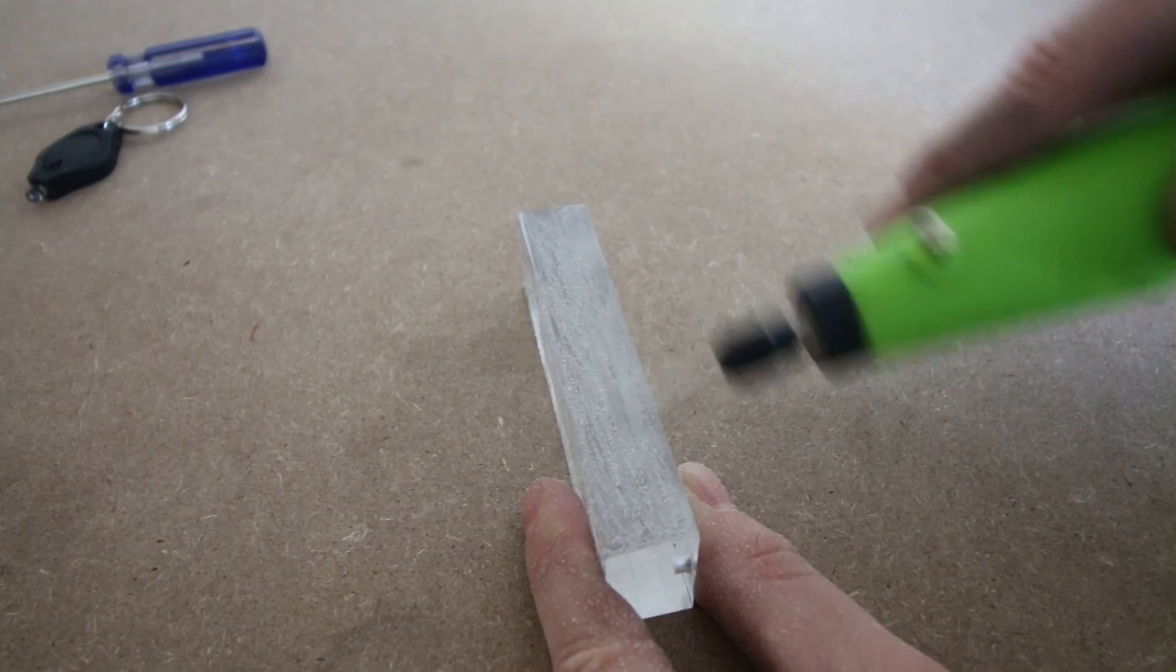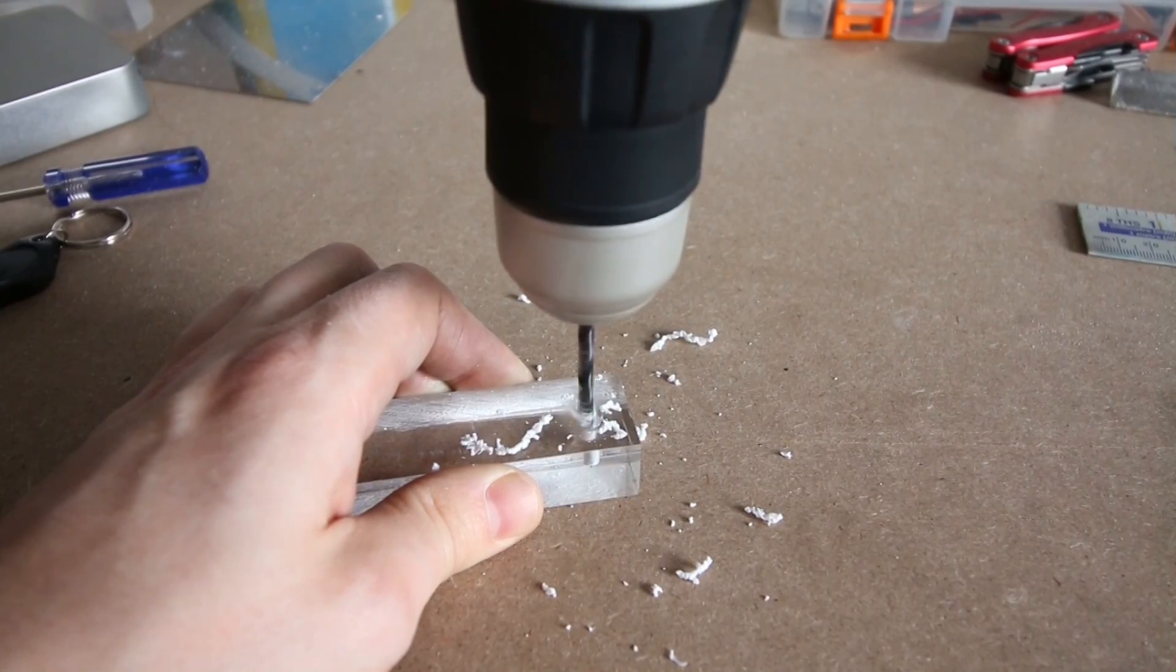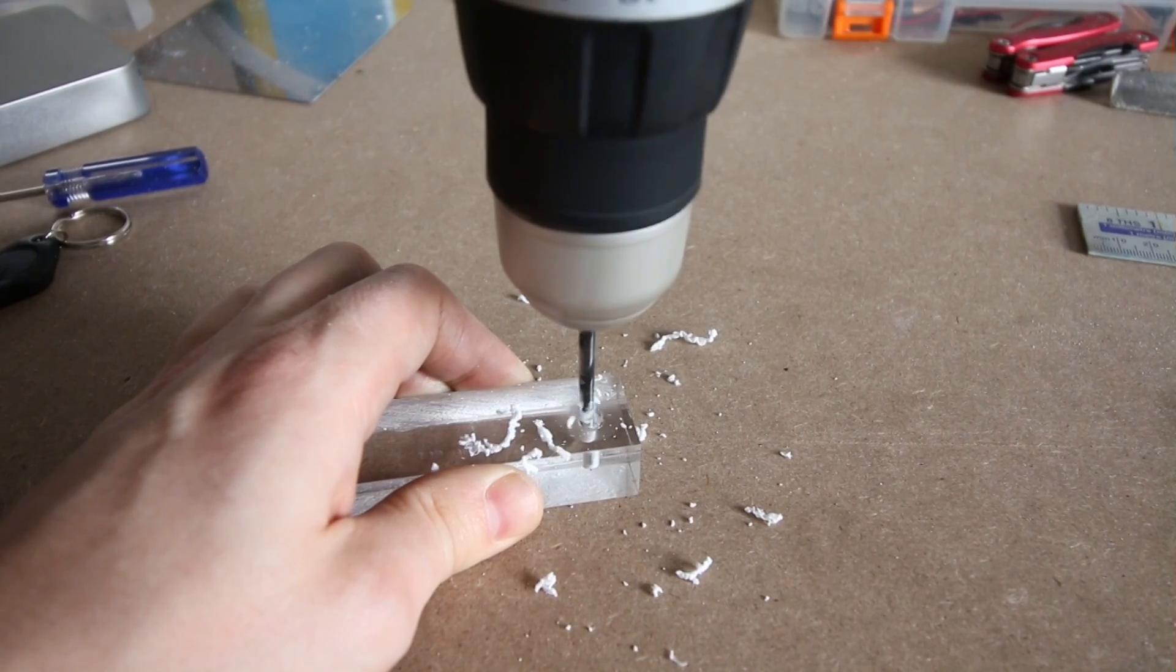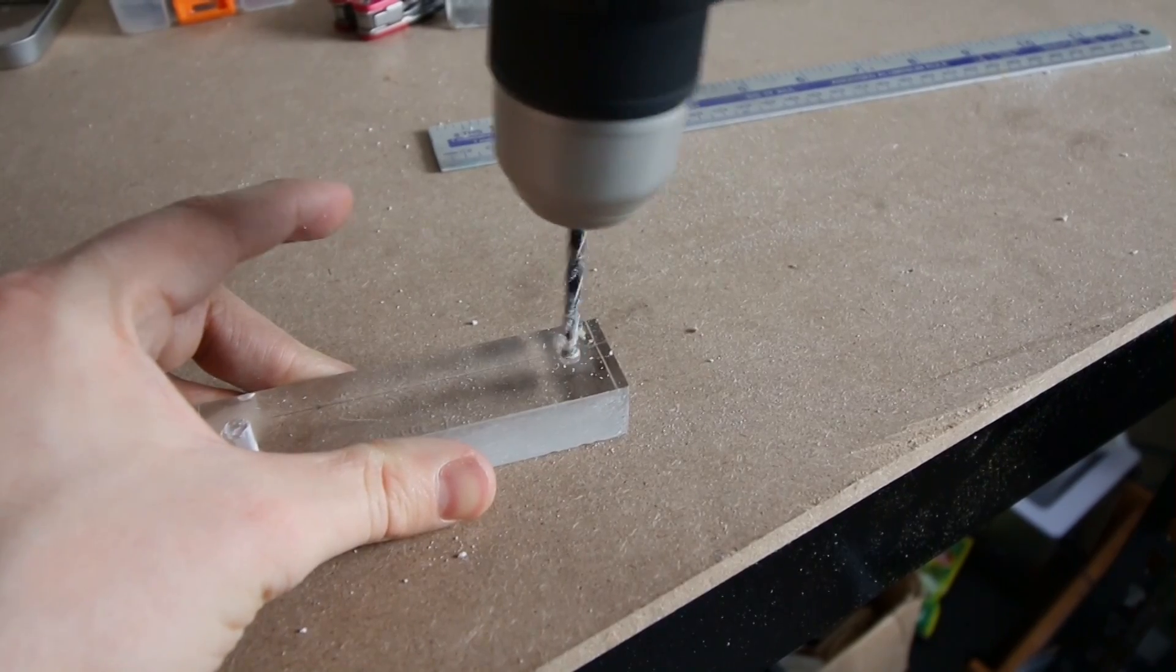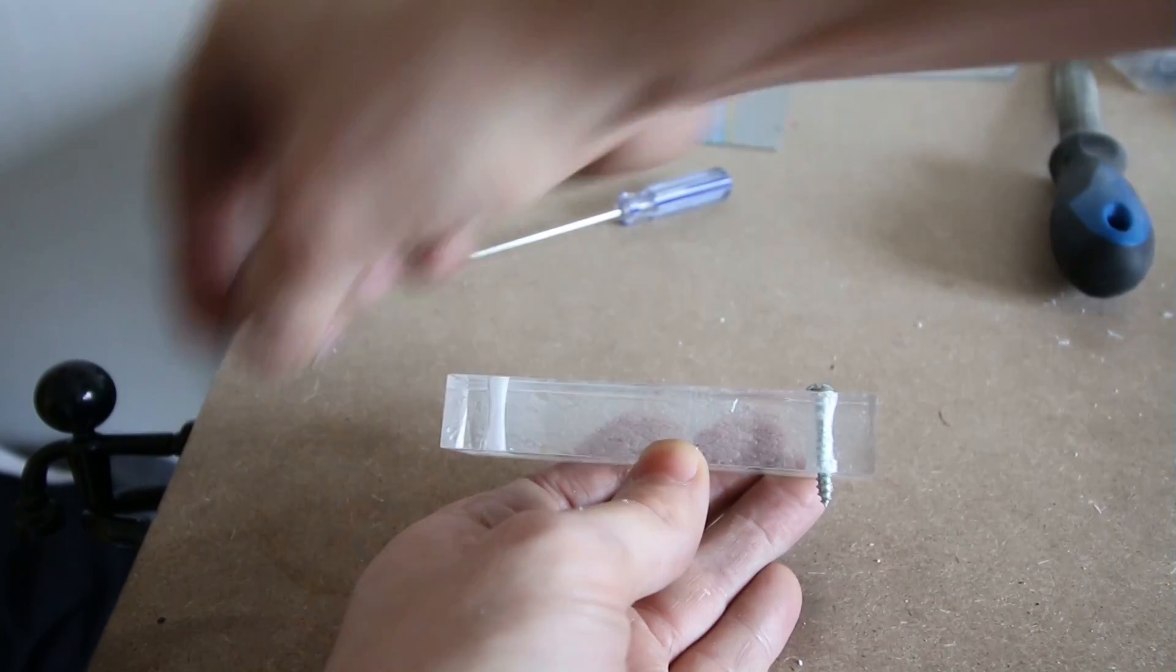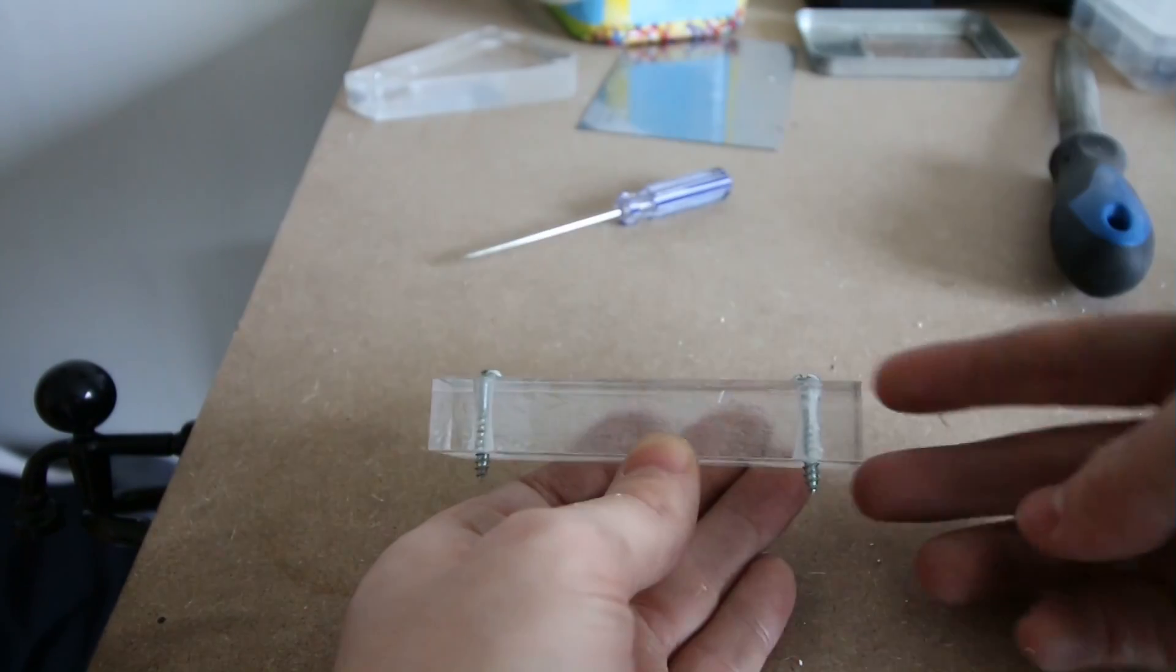Once that was done I used a file and a rotary tool to smoothen out the back. I also marked out two places on each end and then drilled holes through them thick enough to fit screws. There we go.